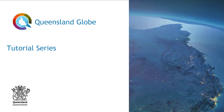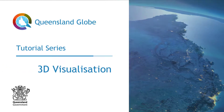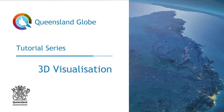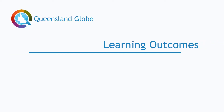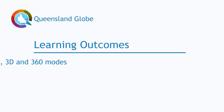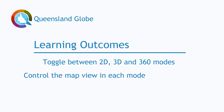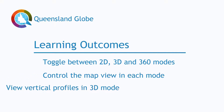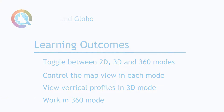Welcome to the fifth in a series of tutorials designed to help you use the Queensland Globe with confidence. Today we will explore using 2D, 3D and 360 visualization modes in the Globe. In this video we will learn to toggle between 2D, 3D and 360 modes, control the map view in each mode, view vertical profiles in 3D mode and work in 360 mode.